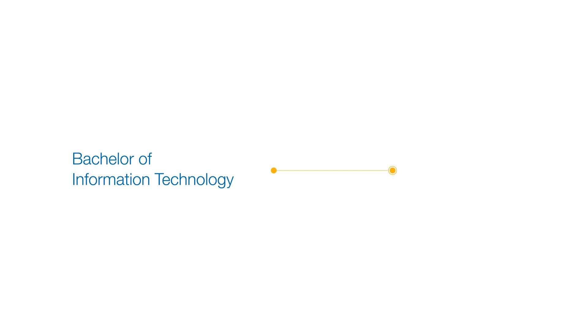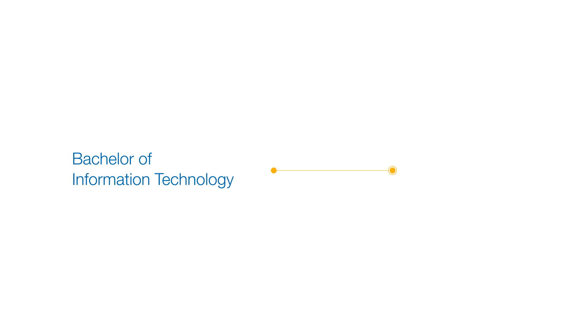You can choose the Bachelor of Information Technology already knowing what your major study area will be, and then select from a wide range of additional subjects that broaden your knowledge to suit your personal interests. If you're still deciding where you'd like your studies to take you, the Bachelor of Information Technology offers the flexibility to try a range of subjects in Year 1 before choosing your major area of study.